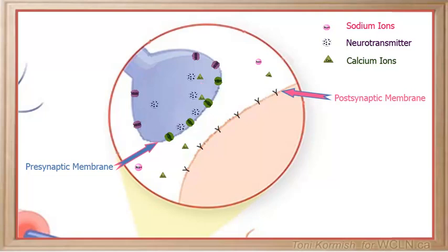The neurotransmitter vesicles fuse with the presynaptic membrane and release the neurotransmitters into the synaptic gap by a process called exocytosis. The neurotransmitter then diffuses across the synapse and binds with receptor sites on the post-synaptic membrane.